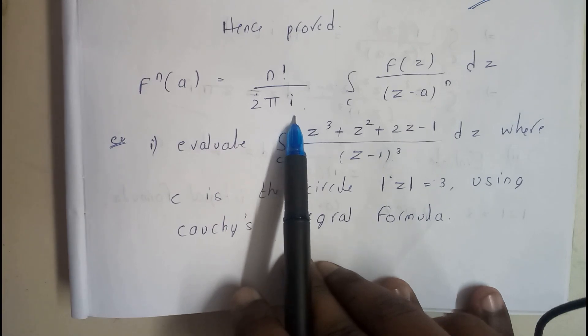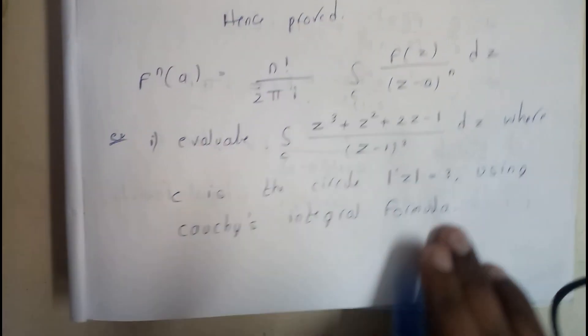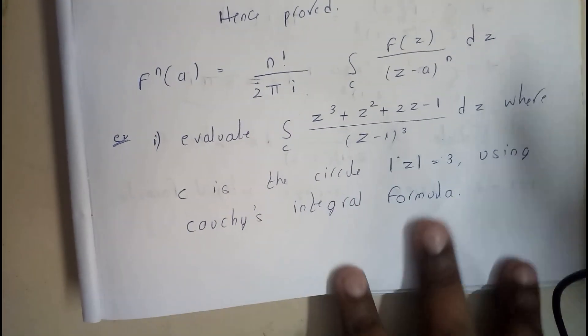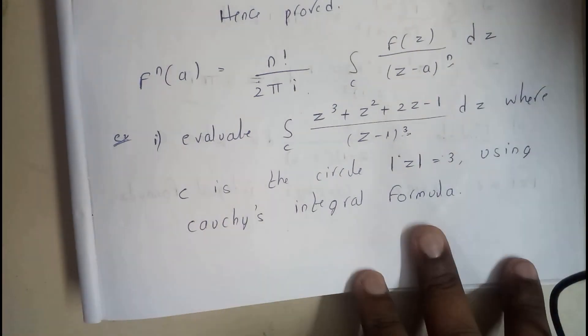n!/(2πi) ∫_C f(z)/(z-a)^(n+1) dz. So from this comparison we can say that n value is 3, right? Okay, let us continue the problem.